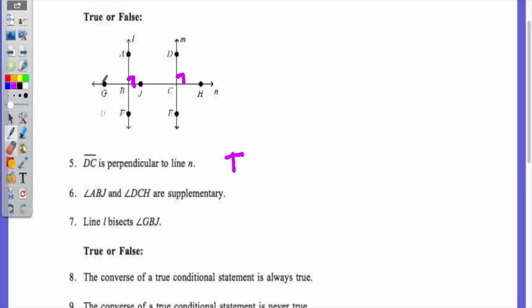L bisects angle GBJ. True or false? It's actually true. I think what you're doing is you're confusing bisecting an angle and bisecting a segment. Here we're talking about bisecting an angle. GBJ is a straight angle, 180 degrees. So when this line comes through, it's creating a 90 degree angle. If this is a 90 degree angle, then the other side is a 90 degree angle. Angle bisector means it cuts the angle in half. So it cuts the 180 degree angle into two 90 degree angles.